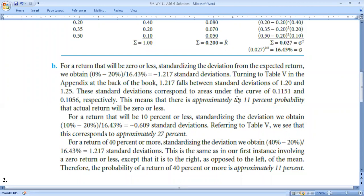We have seen it as 11%. Similarly, for 10%, we calculate 10 minus 20, divided by 16.43. This gives approximately 37%. If we look at 40%, that's 40% minus 20% divided by 16.43. This is the first question. We look up these values from the table.